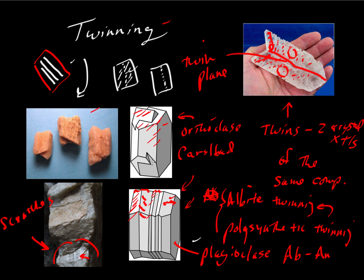That's the idea of twins: these are minerals that have the same composition and the same ordered internal atomic arrangement — otherwise they would not be the same mineral. They are twins, but intergrown in a way that they are at a slightly different orientation.